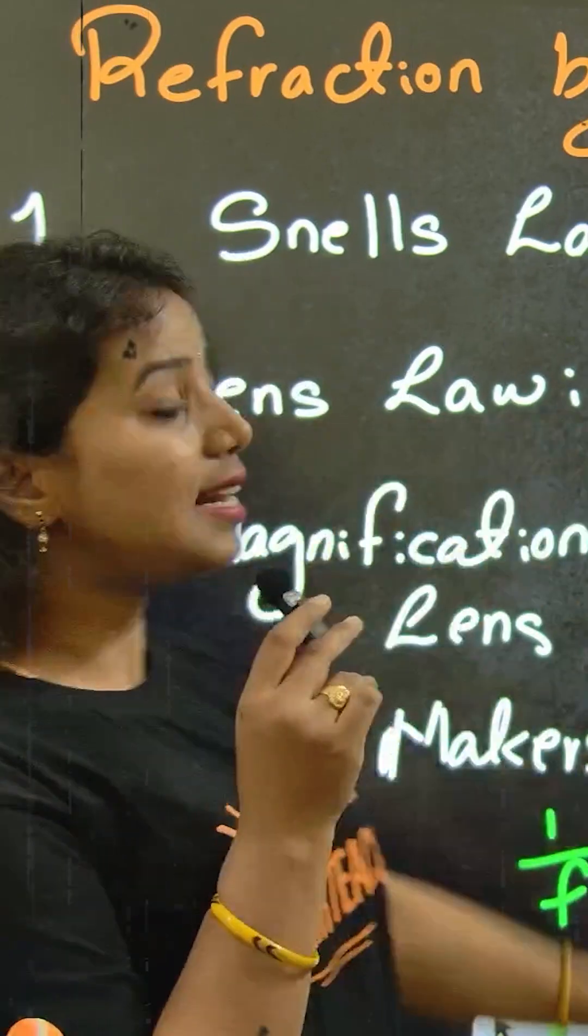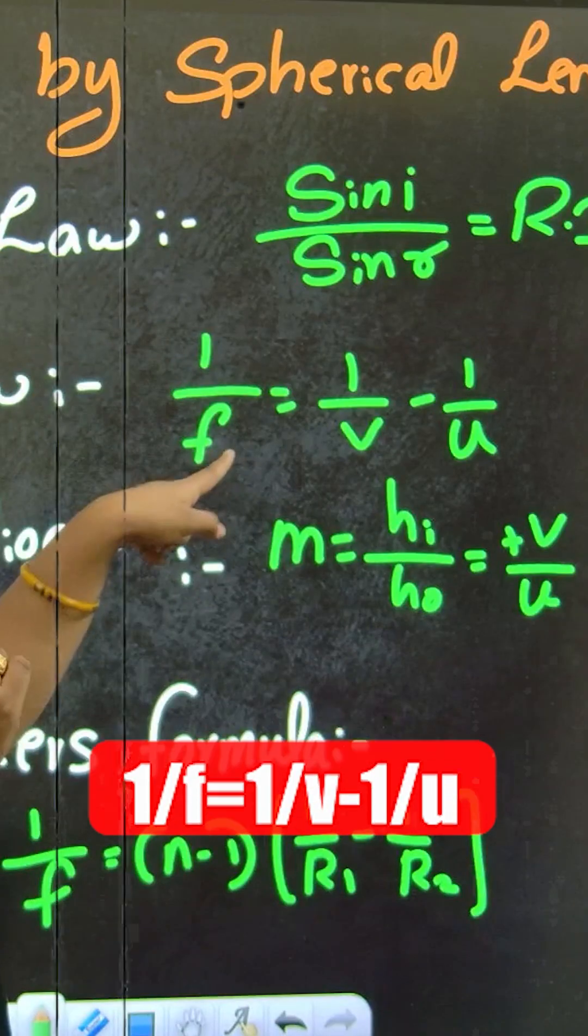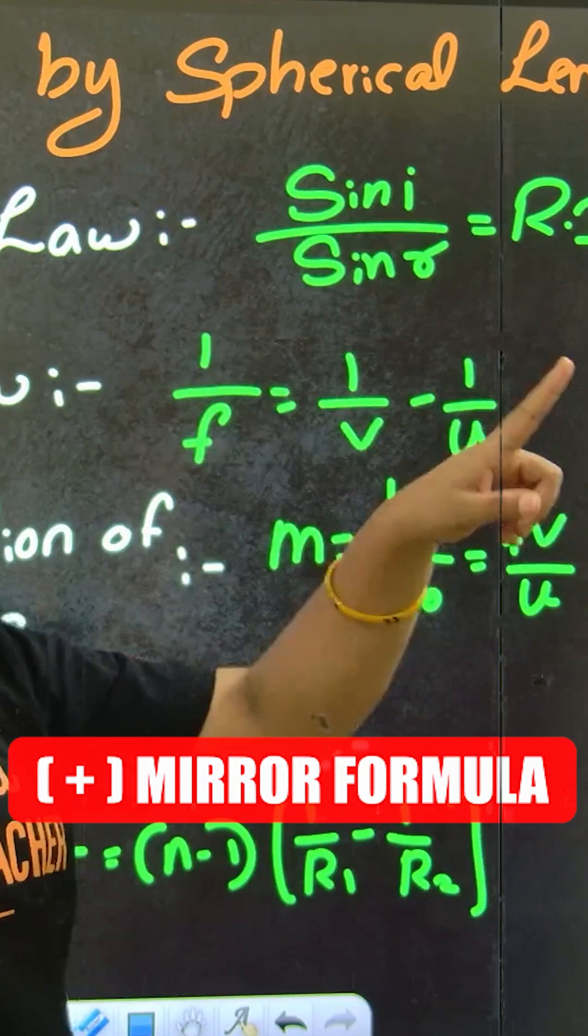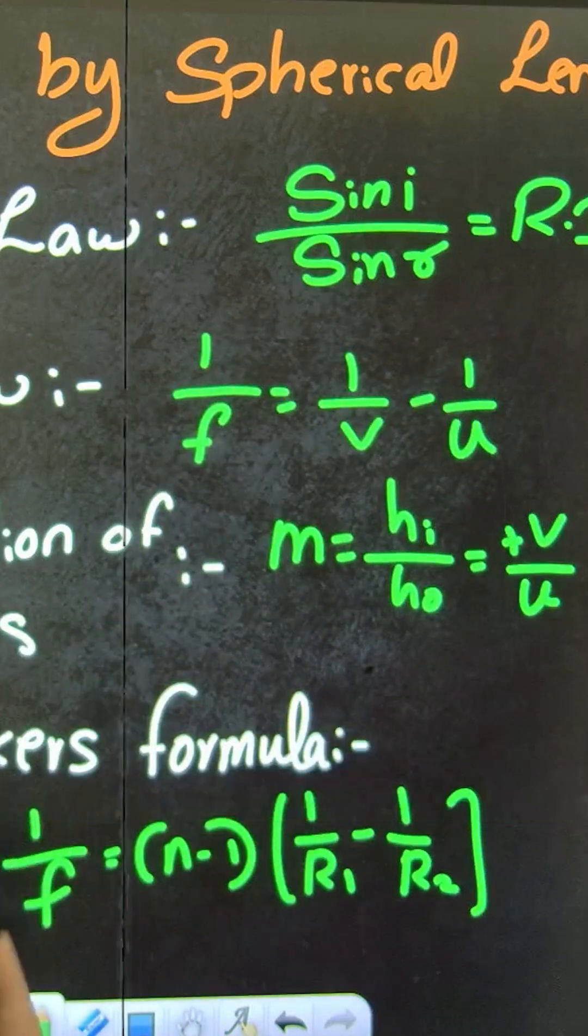And second one, lens law. 1 by f equals 1 by v minus 1 by u. Here plus for the mirror formula, but minus for the lens formula.